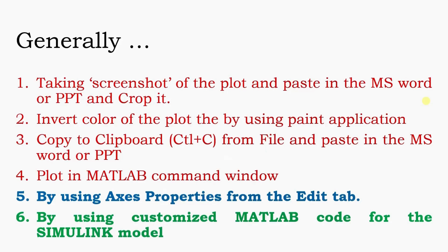The second method is if the figure comes out dark, you invert colors using the Paint application. The third method is to go to the figure window and copy to clipboard. The fourth method is to take variables into the command window and use the plot window. The fifth method is to access properties from the MATLAB edit tab figure window and edit there, but it is time consuming.